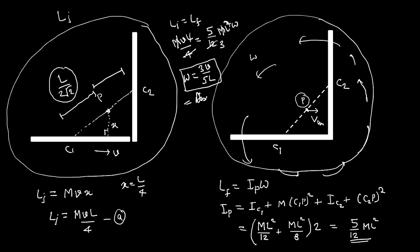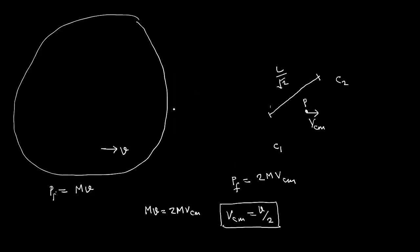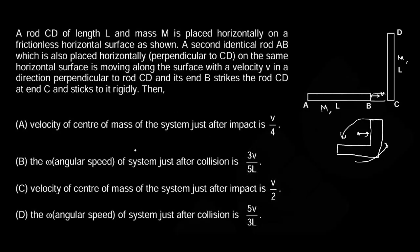So now looking at the options, ω = 3v/5l and vcm = v/2, so options B and T are the correct answers. I hope it is clear. If you have any questions or doubts, please feel free to ask in the comments. I'll be happy to respond. Thank you.